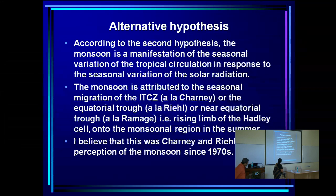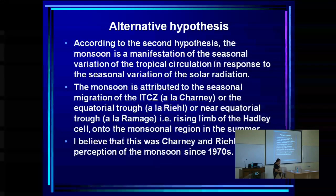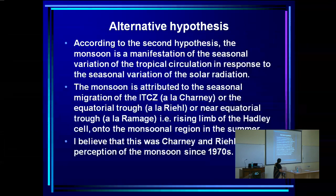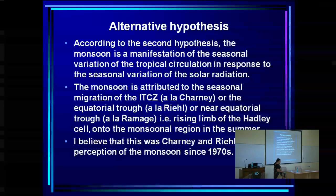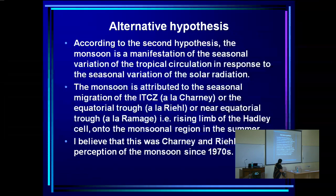The second hypothesis is that the monsoon is the manifestation of the seasonal variation of tropical circulation in response to seasonal variation of solar radiation — it is the same thing but larger amplitude. The monsoon is attributed to the seasonal migration of the ITCZ, as Charlie defined it, or the near-equatorial trough, as Ramage calls it — the rising limb of the Hadley cell onto the monsoonal region. This was Charlie and Drink's perception of the monsoon since about the 1970s.